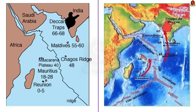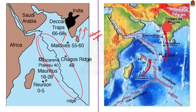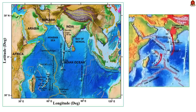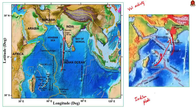Moving on to the formation of these caves — Ajanta and Ellora caves were formed due to volcanic eruptions. When the Indian plate started moving towards the Eurasian plate approximately 100 million years ago, it passed over a hotspot region in the southwestern Indian Ocean. This mantle plume hotspot region is the present-day Reunion hotspot system. This led to volcanic activity in the present-day Maharashtra region, resulting in the creation of the Deccan Traps and some adjacent cave systems.